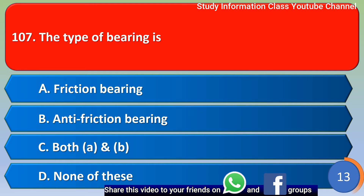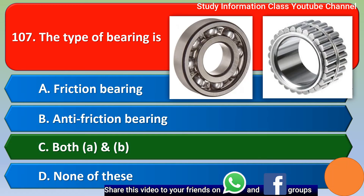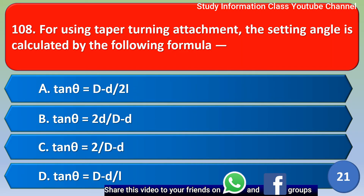Next question: the types of bearing are — option A: friction bearing, option B: anti-friction bearing, option C: both A and B, option D: none of these. The correct answer is option C, both A and B — that is, friction bearing and anti-friction bearing.